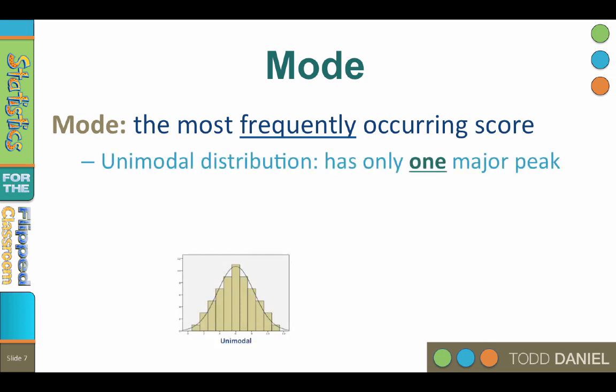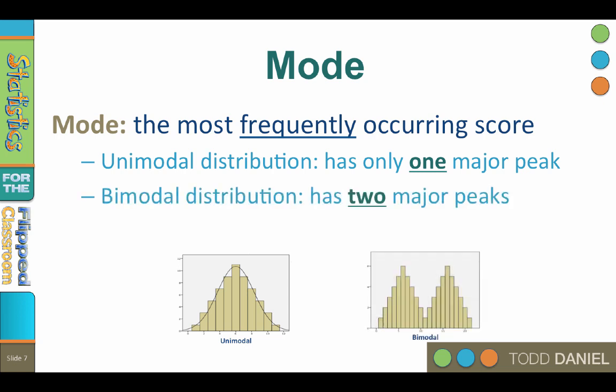If there is one most frequently occurring score — one mode — we call that a unimodal distribution. A unimodal distribution has only one major peak. In other cases there may be two modes. A bimodal distribution has two major peaks.